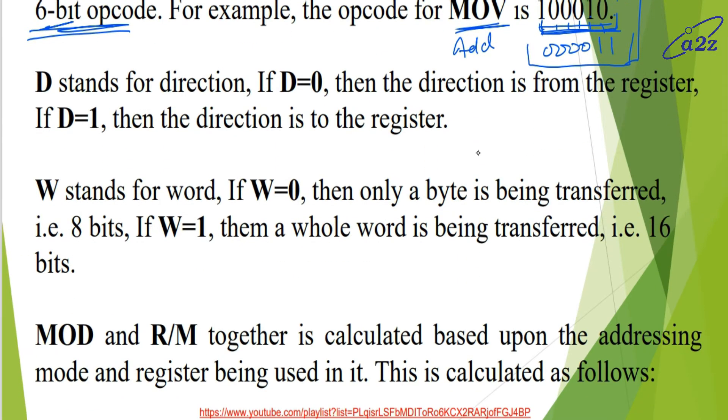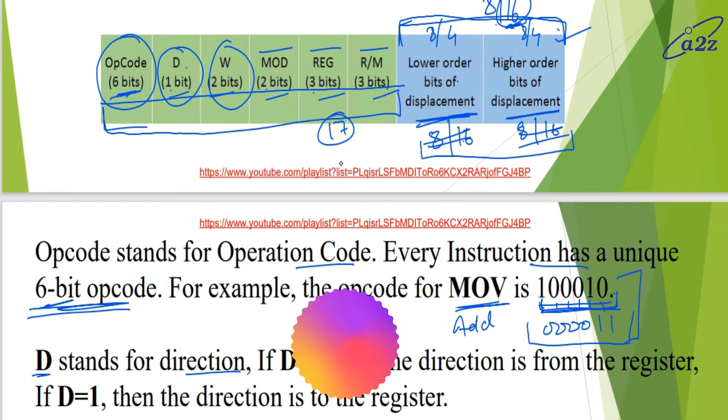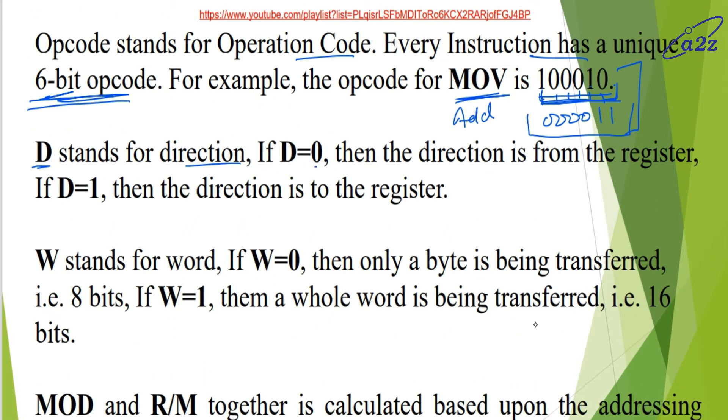Now, D stands for direction. We can have one bit here. So either 0 or 1. If D equals 0, then direction is from the register. If D equals 1, then direction is to the register. Means register se data is from. To the register means register mein data is going. Either we take data from register or give data to register. That will be known from D bit.